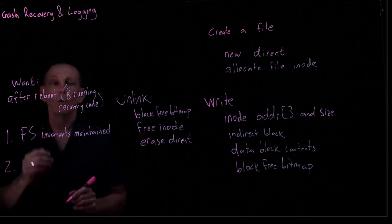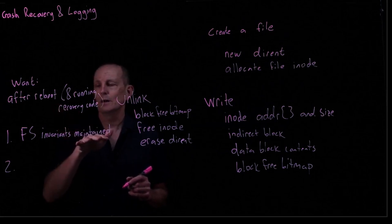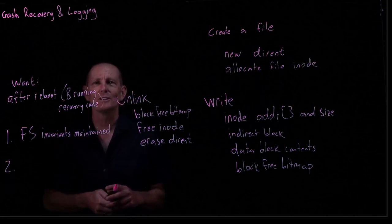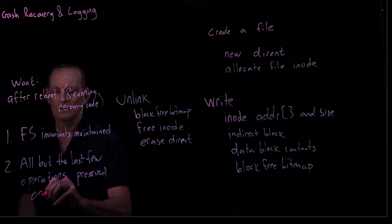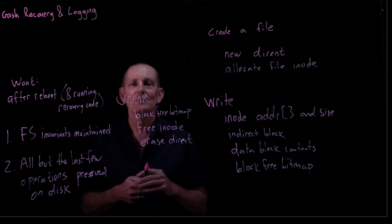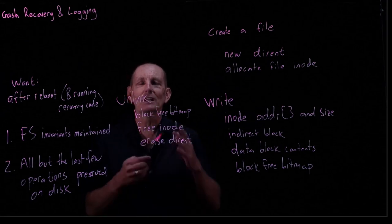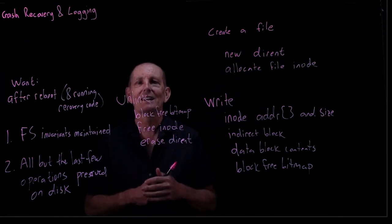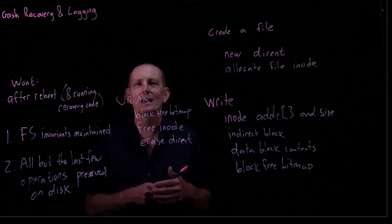The second thing we want, one way we could maintain this is if we erased the file system, we'd certainly get that file system invariants maintained. But, of course, we also want preservation. So we want all but the last few operations to be preserved on the disk. So if we wrote something yesterday, we certainly want that to be maintained. But if we are crashing the write that was just in progress, we're fine if that didn't get preserved to disk. So a user might have to check the last few operations and see did they actually make it or not.